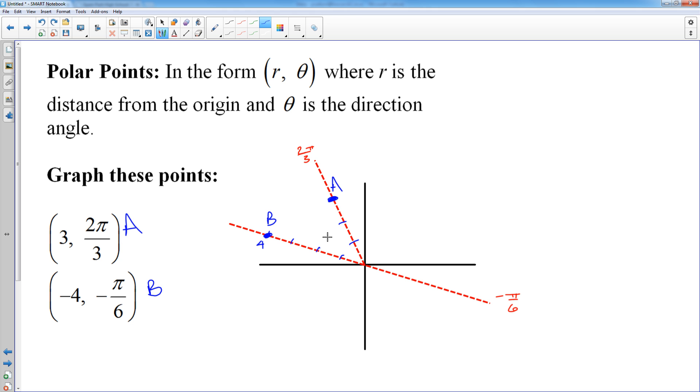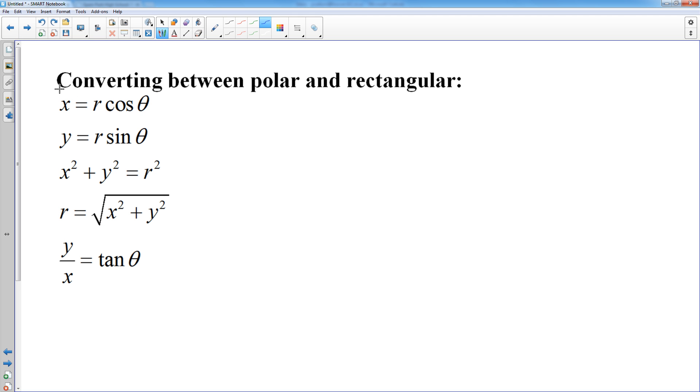By the way, it also turns out that that angle, if you're going negative π over 6, that's the same angle as 5π over 6. And you could have also called point B positive 4, 5π over 6. So there are multiple ways you can name the exact same point in polar coordinates. So there's some graphing points.